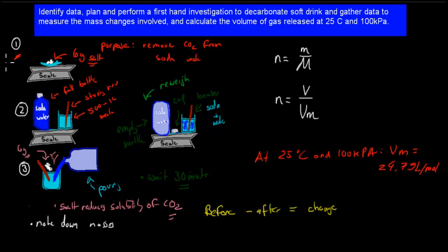So before experiment minus after equals change. So let's say I'm going to give you a random number. Let's say we have these 6 grams of salt, the full bottle, the stirring rod, and the 500 ml beaker. Let's say, let's assume this weighed 1506, 1600 grams. So this was before. And once we've re-weighed all of it, it only weighed, let's say, 1498 grams.